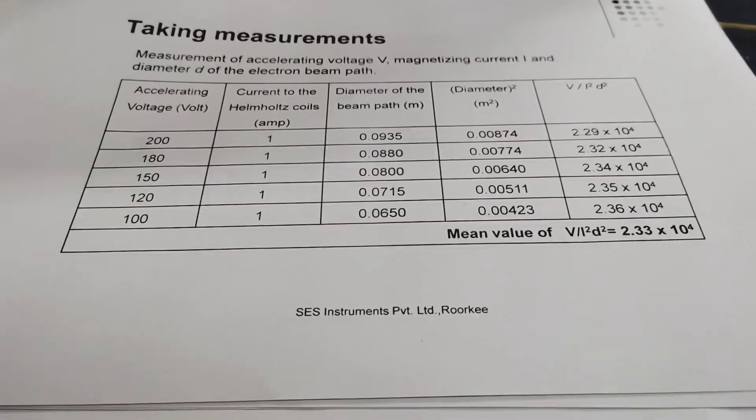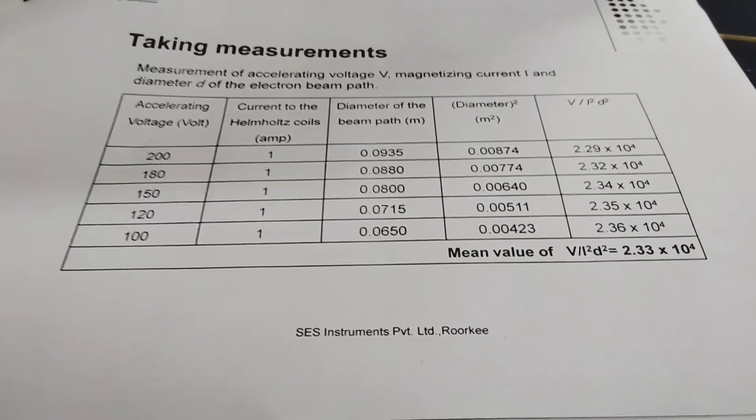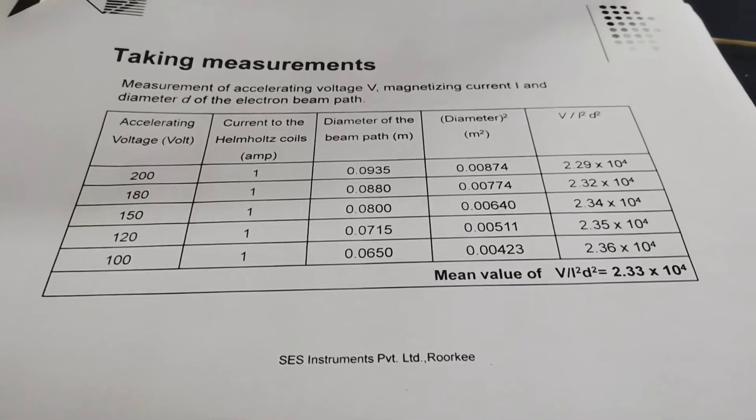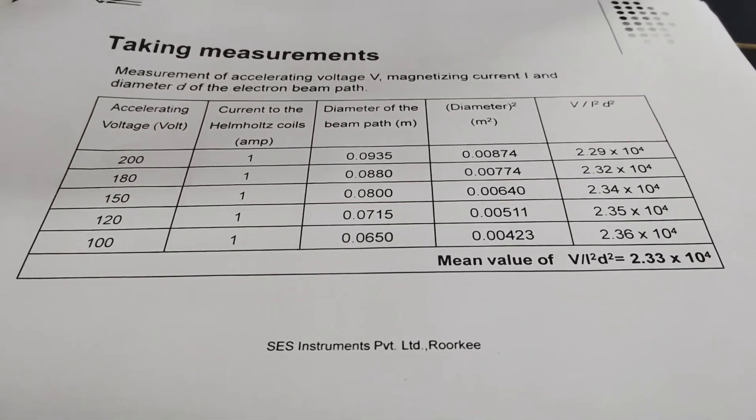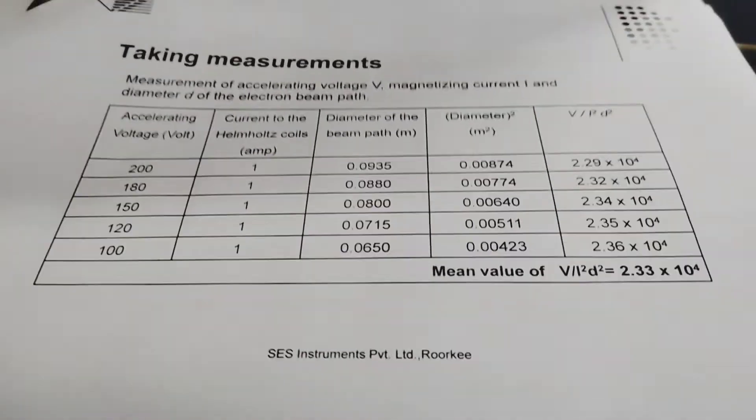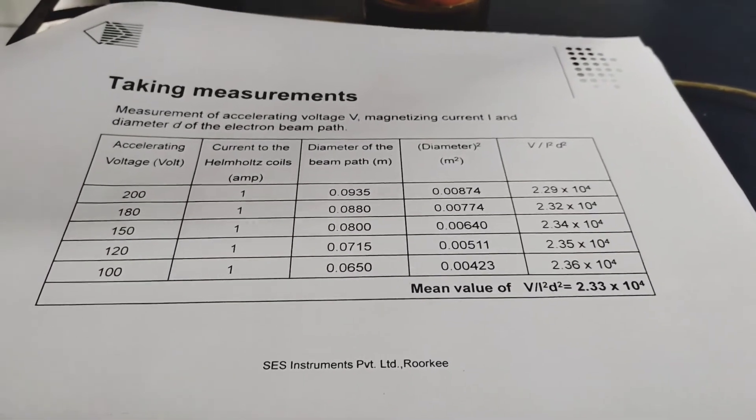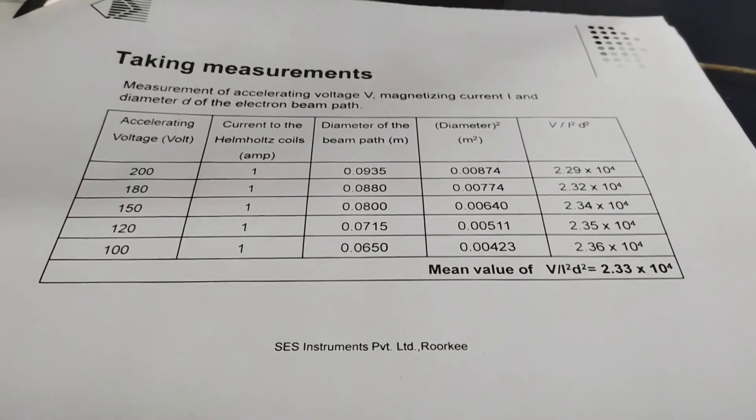After taking the readings from the apparatus, the table is complete. So we have data for diameter and we have data for V versus diameter.